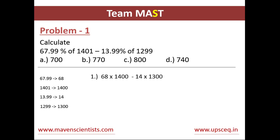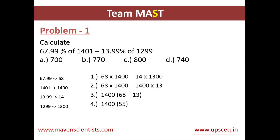Now we have the equation as 68 × 1400 minus 14 × 1300. We can see that 14 is the matching figure between these two values, so we'll twist the equation a little bit. We'll write 1400 × 13 instead of 14 × 1300, giving us a common value between both figures. We'll take 1400 as common and we are left with 68 minus 13.